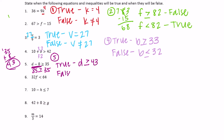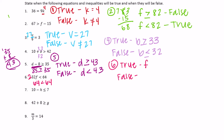Number six: 32 times f is less than 64. If we made it equal, 32 times 2 would be 64, and 64 is less than 64 is not true. If we make f equal to 3, then 32 times 3 is 96, and 96 is not less than 64. So f needs to be less than 2 for it to be true, and for it to be false f needs to be greater than or equal to 2.